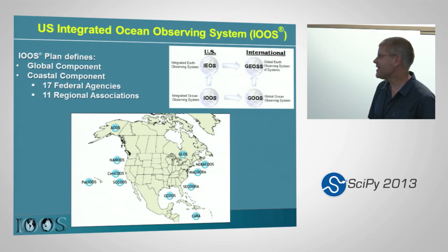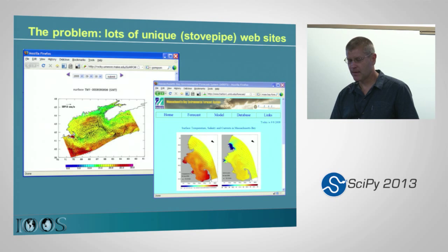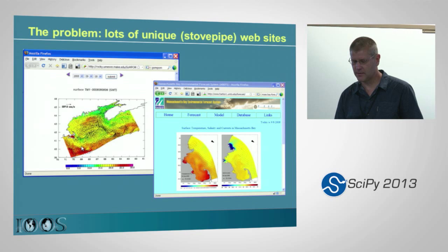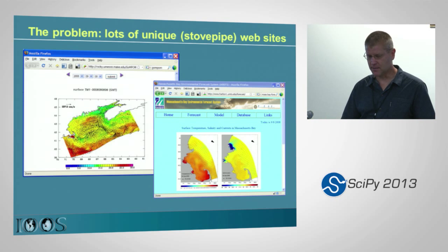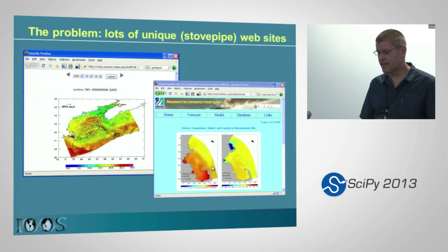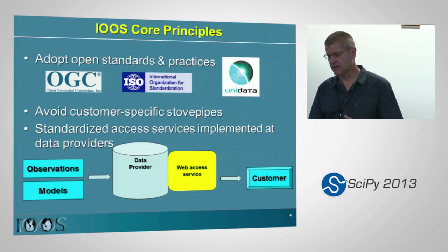Emilio back there is from the NANOOS region up in the Pacific Northwest — you can ask him about IOOS too. In the Northeast region, there were two different academic institutions running two different forecast models in the same region — this is the Gulf of Maine and a zoom into Massachusetts Bay. They were running forecasts on the same day, the same variable — temperature — and yet to compare or even get the data was a challenge. They had funky web interfaces and you couldn't plot stuff on the same scale. We're clearly trying to get away from this problem and go to a standardized solution.